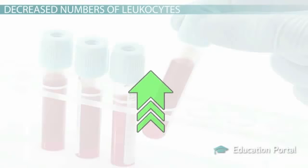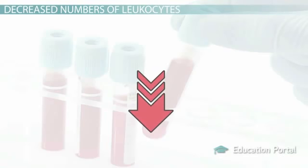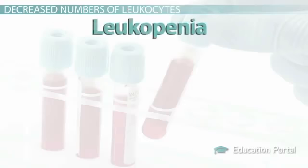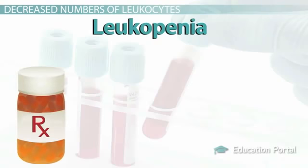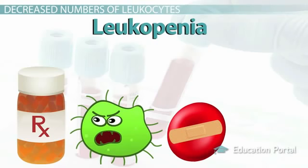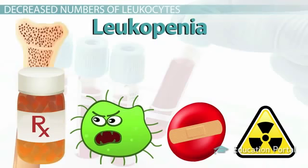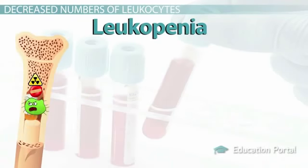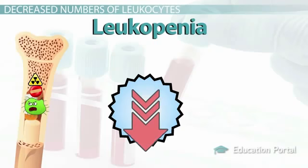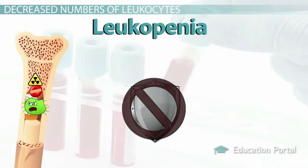There's always another side to every story — this is no different for white blood cells, where decreases as opposed to elevations may be noted during testing. While there are many nuanced reasons for why white blood cells may be decreased, the main theme is what leukopenia results in. Leukopenia can occur due to medications like corticosteroids, infections such as HIV turning into AIDS, aplastic anemia, radiation, and certain types of cancer. If any of these processes destroy the bone marrow or the white blood cells themselves, the end result is a suppression of the immune system's ability to produce or use white blood cells to fight off disease.